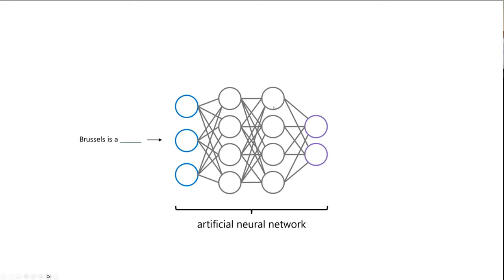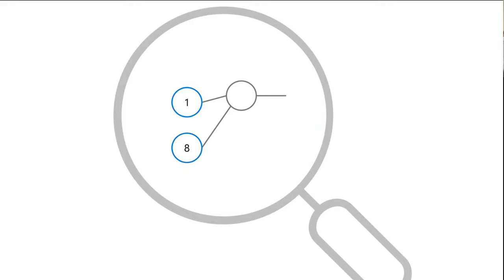ChatGPT — you all know that tool. It's developed by the company OpenAI, based on the GPT-3.5 Turbo model for the free version and GPT-4 for the base version. In the case of GPT, it takes text as input — say, 'Brussels is A' — the signal propagates through the artificial neural network, and each neuron decides if the signal goes to the next one. What comes out is the most probable next token or next word. It's essentially just multiplications and additions, and the design of when signals pass through is what data scientists work on.